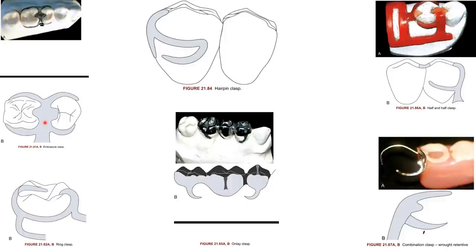Ring clasp is used in distal edentulous conditions with a distal lingual undercut, where a reverse circulate clasp cannot be placed due to absence of a buccal undercut. Ring clasps are also used in cases with lingually tipped molar abutments. Disadvantages: alters food flow pattern, difficult to maintain physical quality, difficult to adjust. Contraindication: when the buccinator attachment lies close to the molar.